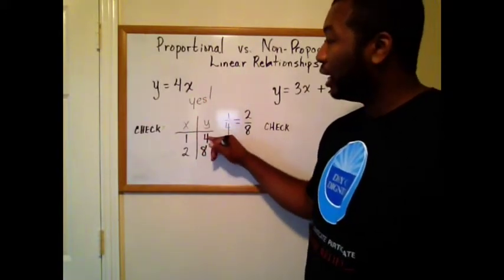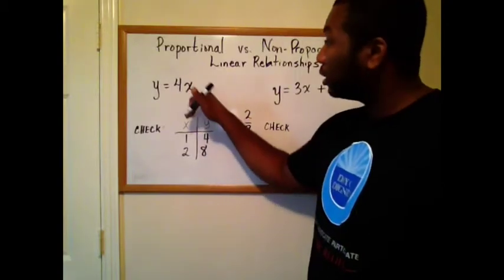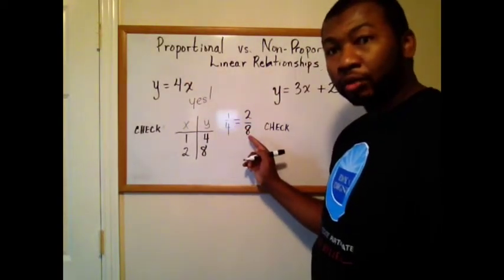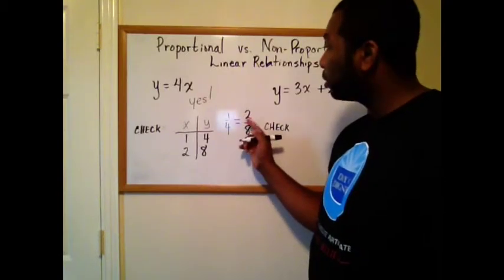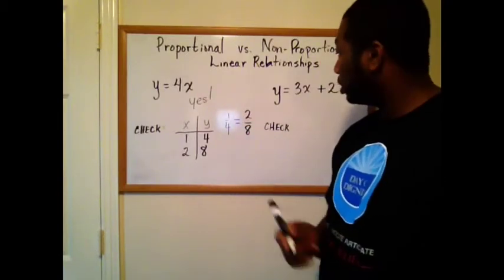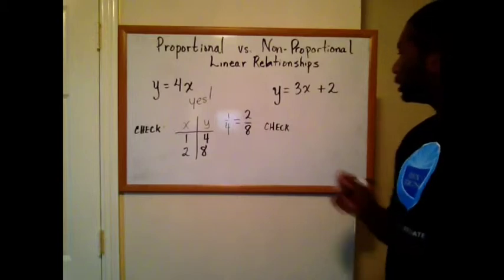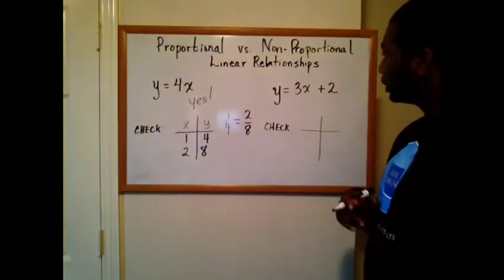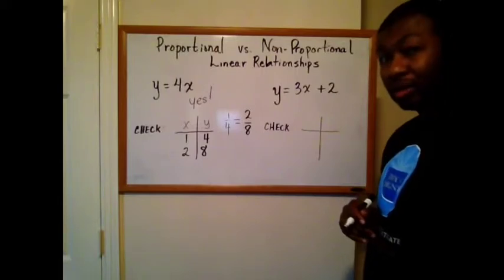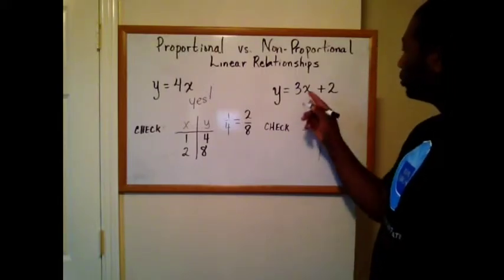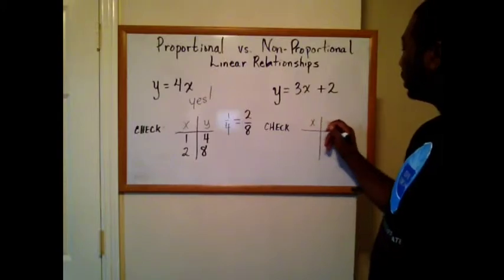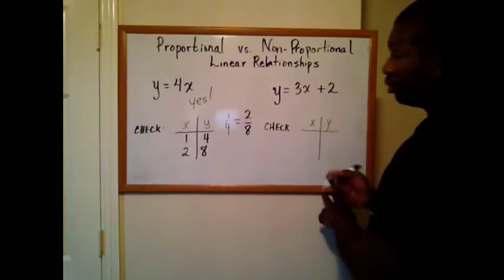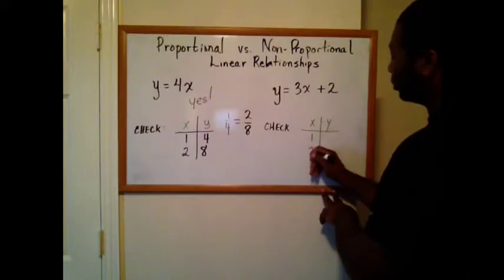Again, find two points that go with this equation and set them up as fractions. Cross multiply to see if they're equal. Let's try over here. Set up my t-table. Am I going too fast? Pause it. Y equals 3x plus 2. My x, my y. So I'll let x equal one again and I'll let it equal two.